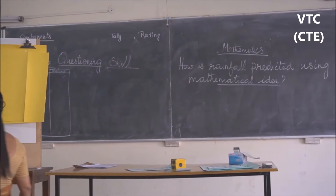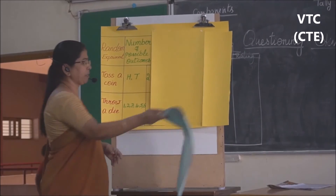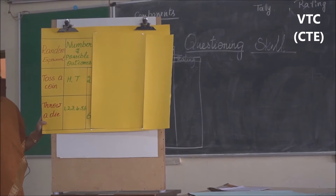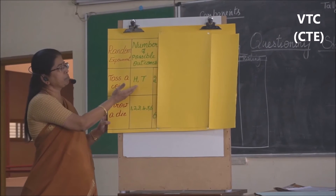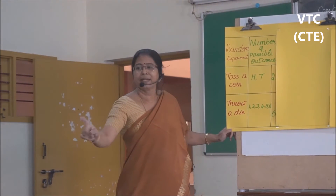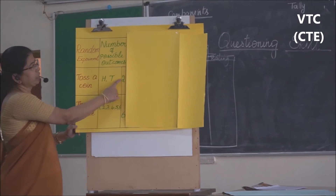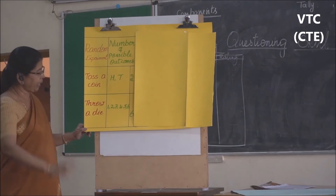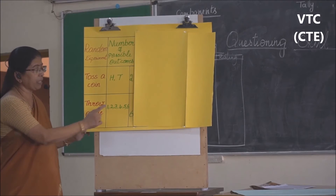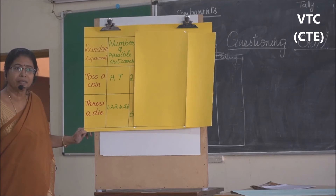Now let us take the random experiments we have discussed — observe the chart. The two random experiments are tossing a coin and throwing a die. How many outcomes are there for tossing a coin? Two — H and T, meaning heads and tails. Those are called possible outcomes. Can you tell the possible outcomes for throwing a die? One, two, three, four, five, six — the number of possible outcomes is six.